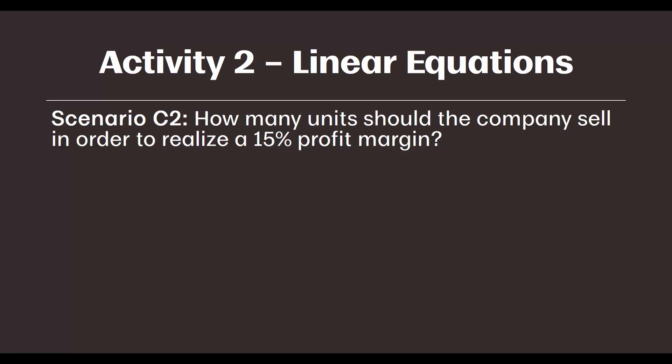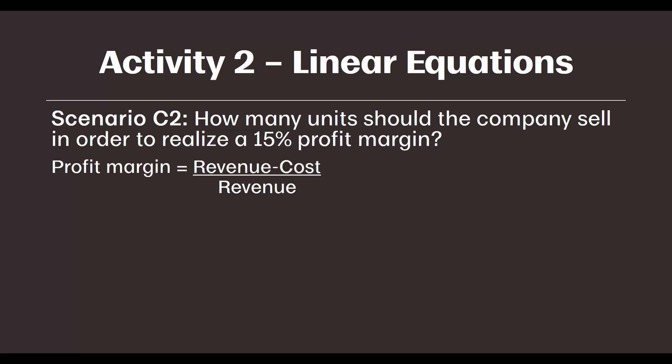Remember in the last video, we said the profit formula is revenue minus cost equals profit. It is presented as an integer, or we would present it in dollar amount. Profit margin, though, is presented as a percentage. To calculate profit margin, we divide profit — so revenue minus cost — by revenue.